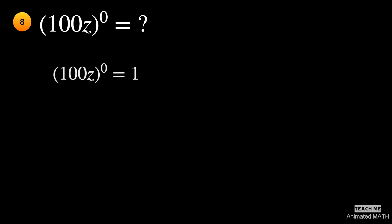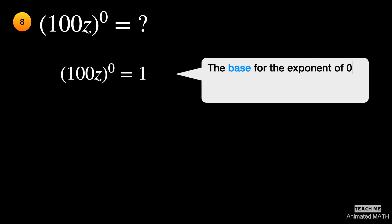The base for the exponent of zero is 100z. By definition, the base 100z raised to the zeroth power is equal to 1.